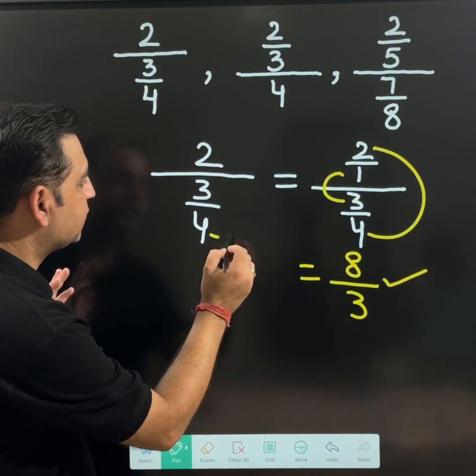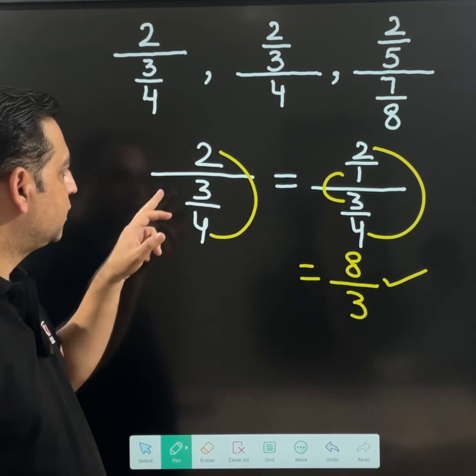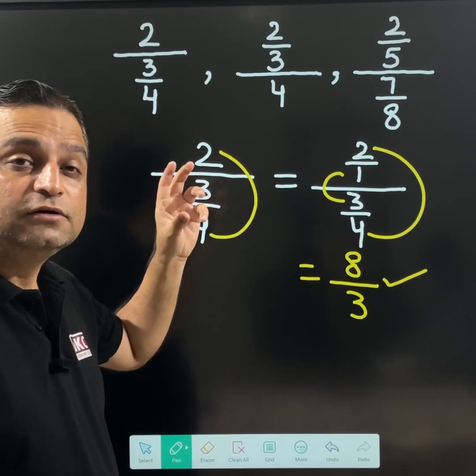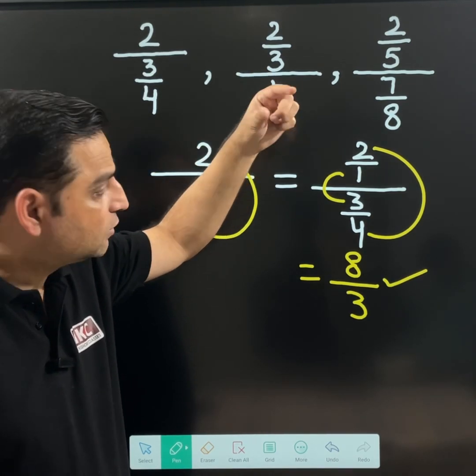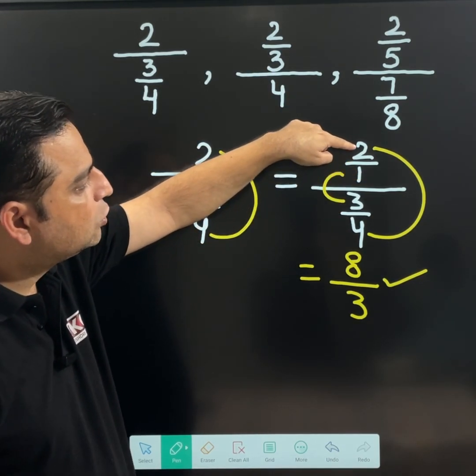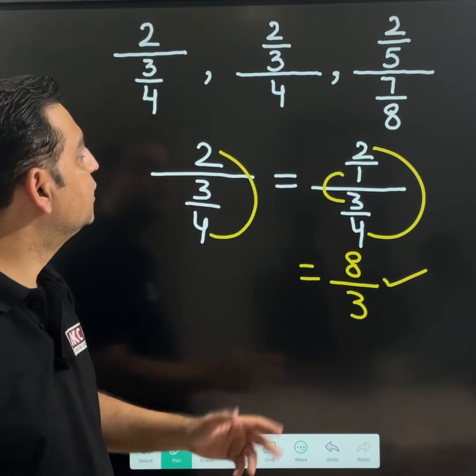You can also do like this. 4 is multiplied by 2 and 3 obviously the same. But to relate it with the previously done concept this is the best way. 2 can be written as 2 upon 1. This can be done easily.